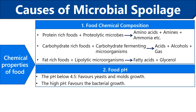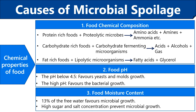Food pH also influences the growth of specific microorganisms. pH below 4.5 favors the growth of yeast and mold, while high pH favors bacterial growth. The moisture within the food also favors microbial growth — 13% free water favors microbial growth. However, high sugar and salt concentration can prevent the growth of microorganisms.